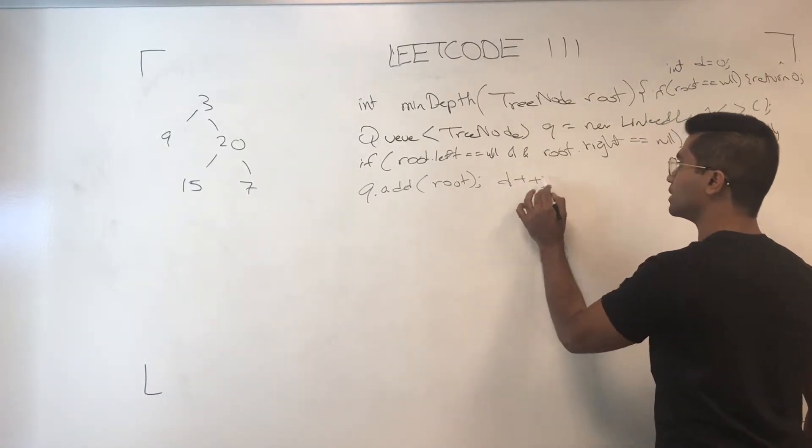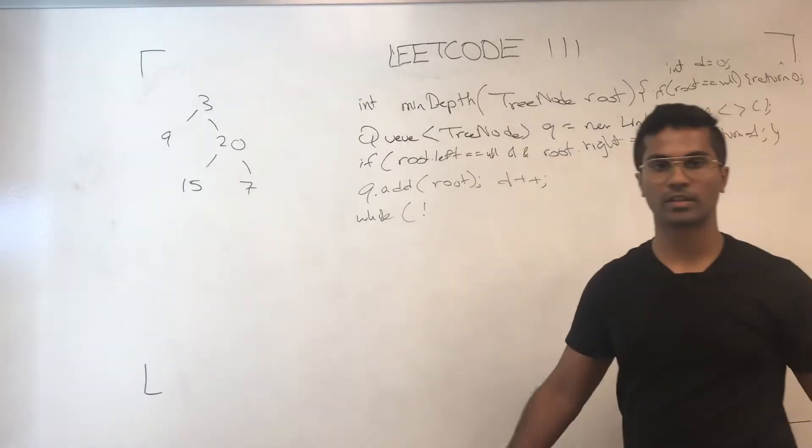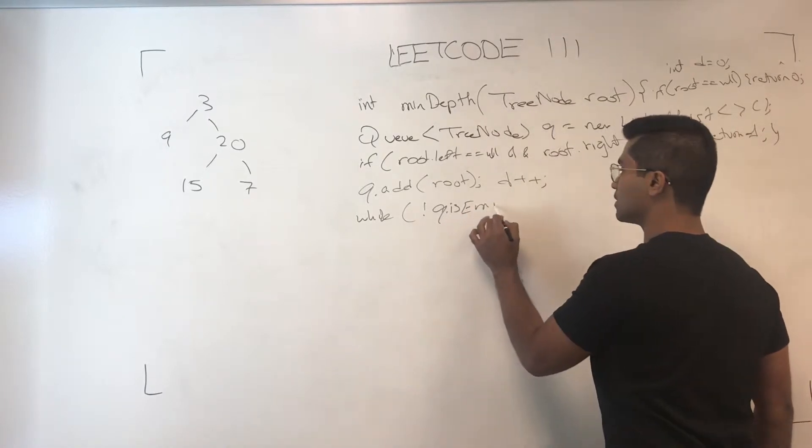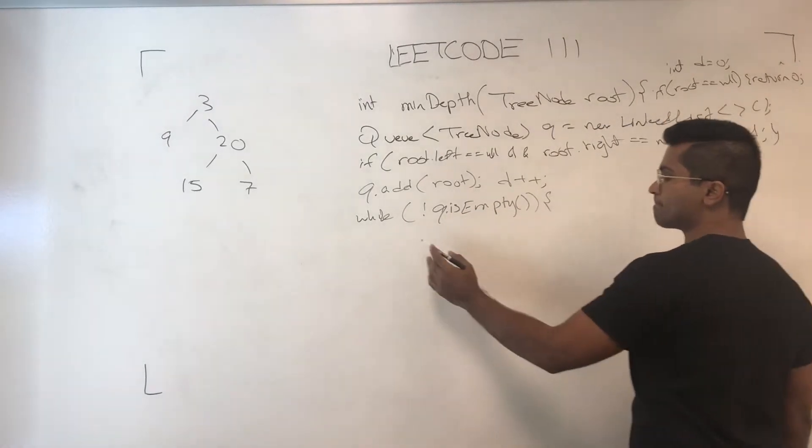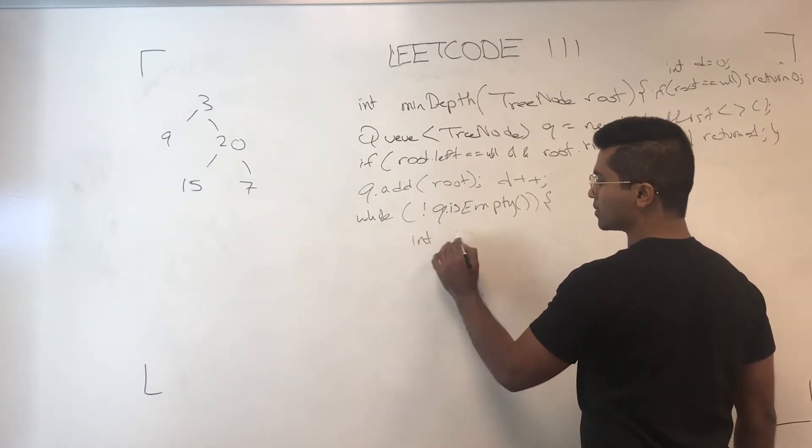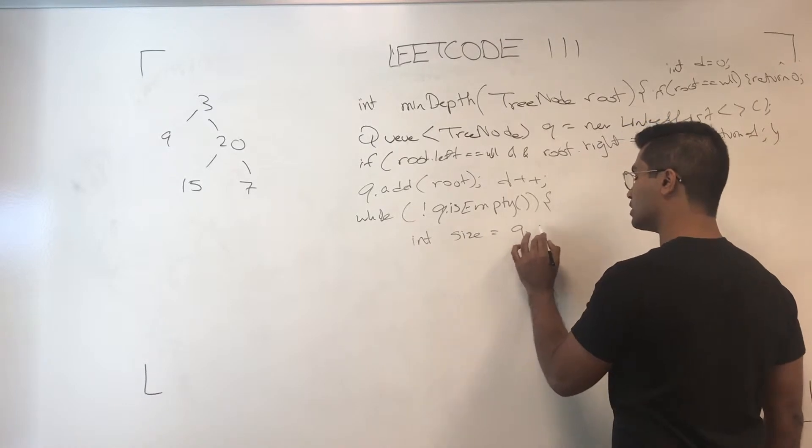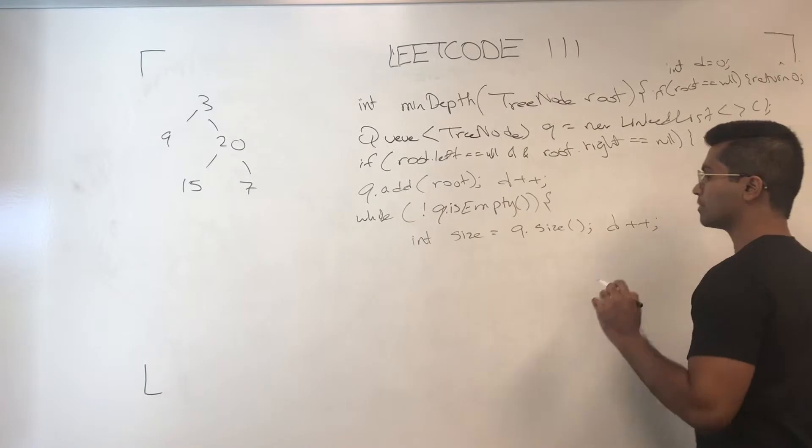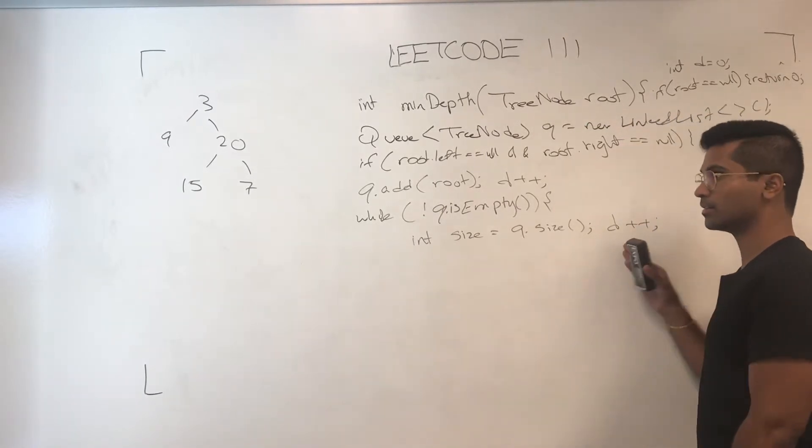And we'll increment d while Q, now this is standard BFS we all know, Q isn't empty. So size is going to be Q dot size, and d plus plus. So this is a layer.